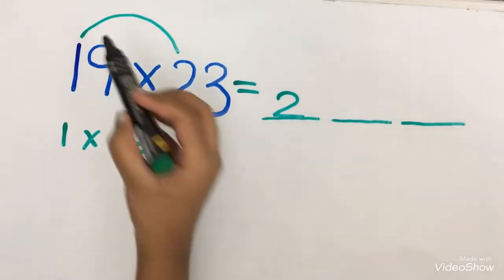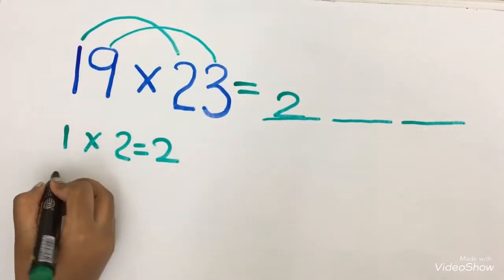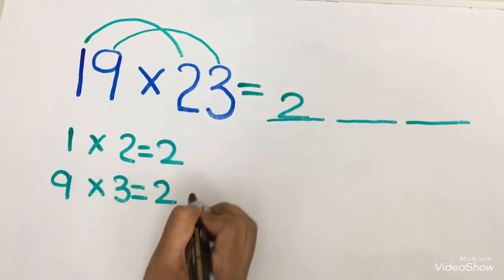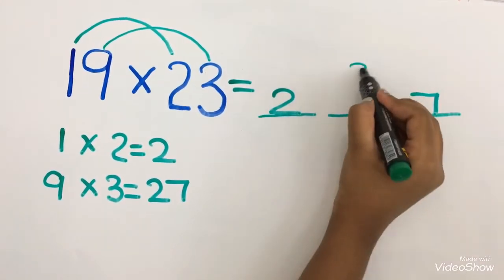Now I am going to multiply 9 into 3. So 9 into 3 equals to 27. I am going to write 7 here and 2 carryover.